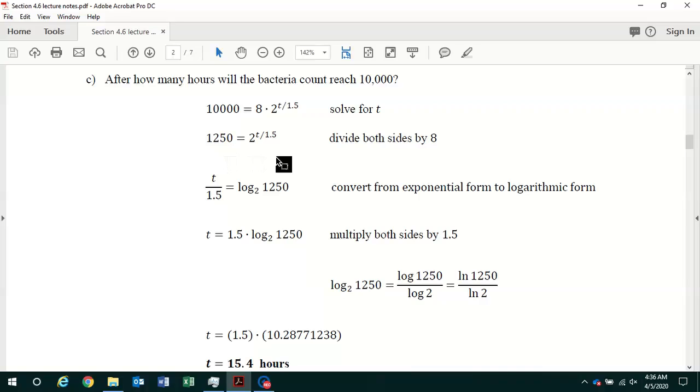We learned in the previous section there's a couple of different ways of solving this type of equation for the exponent. With this problem, I'm going to convert from exponential form to logarithmic form. So, the exponent t over 1.5 equals log base 2 of 1,250. Remember, the base of the exponential and the base of the logarithm are the same.